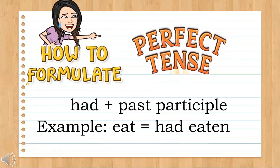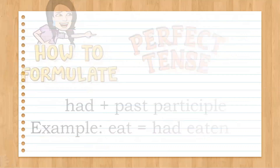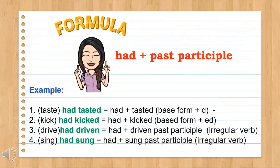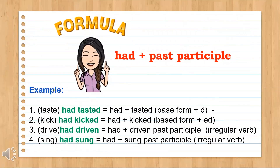How do we formulate a past perfect tense? First, add the helping verb 'had' plus the past participle. Example: 'eat' — had plus past participle 'eaten' — past perfect tense of eat is 'had eaten.' Study the formula: had + past participle. Taste → had tasted, kick → had kicked, drive → had driven, sing → had sung.